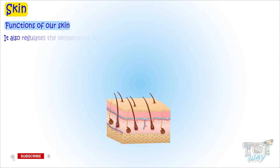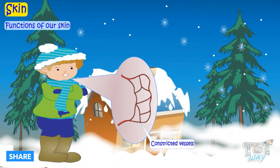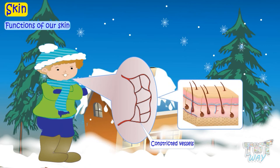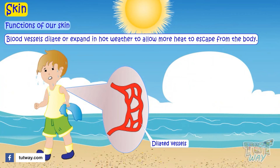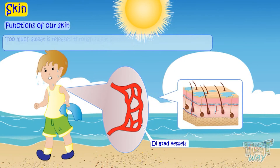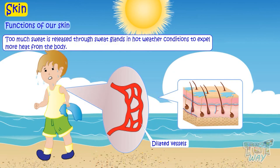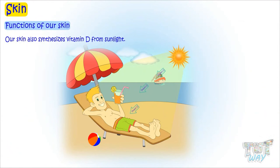Skin also regulates the temperature of our body. The blood vessels in the skin constrict in very cold conditions to retain heat in the body. Also, less or no sweat is produced in cold weather conditions so that no heat is lost from the body. Blood vessels dilate or expand in hot weather conditions to allow more heat to escape from the body, and too much sweat is released through sweat glands in hot weather conditions to let more heat escape. Our skin also synthesizes vitamin D from sunlight.